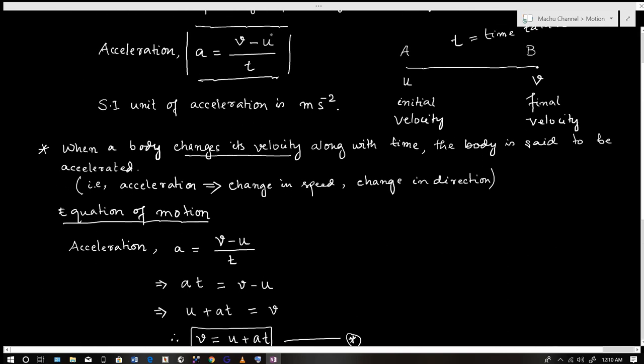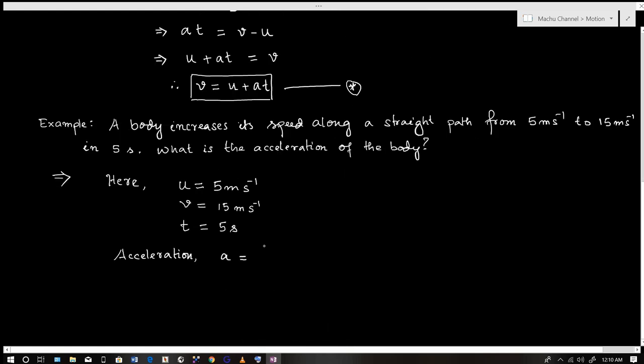Using the formula a equals v minus u divided by t: a equals 15 minus 5 divided by 5, which equals 10 divided by 5, equals 2. The acceleration is 2 meters per second squared.